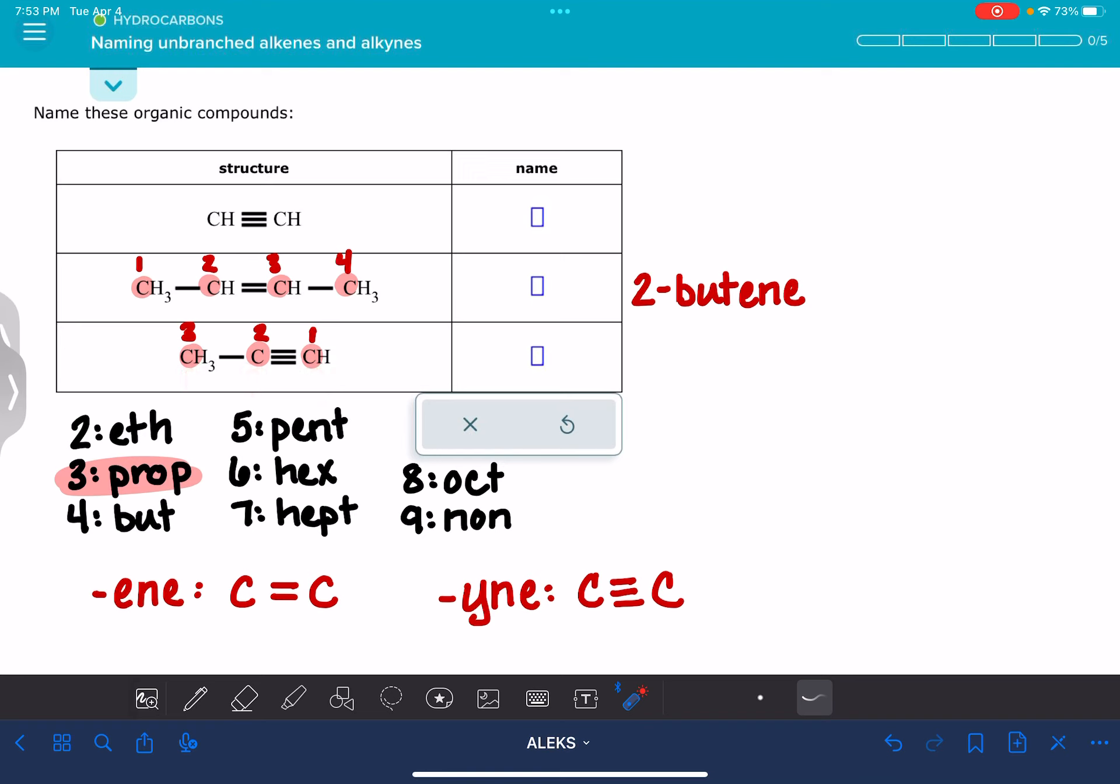To put the name together, we've got a three-carbon chain. That's a prop. It's a triple bond, so that means that we're ending the molecule's name with yne, and the location of the triple bond is carbon number one, 1-propyne.